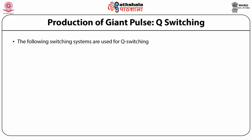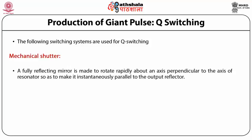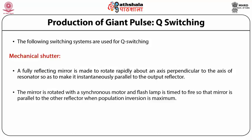The following switching systems are used for Q-switching. One is the mechanical shutter: a fully reflecting mirror is rotated rapidly about an axis perpendicular to the resonator axis, made instantaneously parallel to the output reflector. The mirror is rotated with a synchronous motor, and the flash lamp is timed to fire when the mirror is parallel to the other reflector at maximum population inversion.